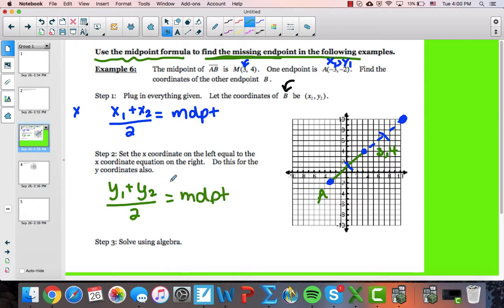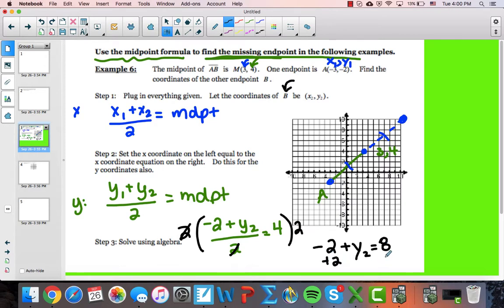So I'm going to do y₁ plus y₂ over 2 equals the midpoint. I'm going to plug in what I have. This is the y-coordinates we're talking about. So y₁ was -2 plus y₂, all over 2 equals the coordinate of the midpoint, in this case was 4. Now I'm going to multiply both sides by 2 to clear out those fractions. The 2's will cancel here, so I get -2 plus y₂ equals 8. I'm going to add 2, and I get y₂ is equal to 10.